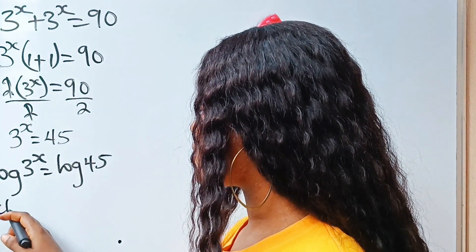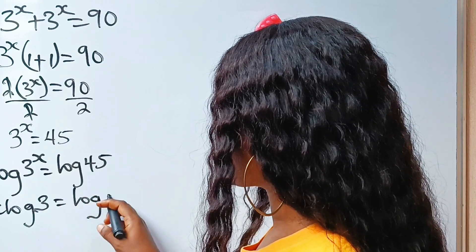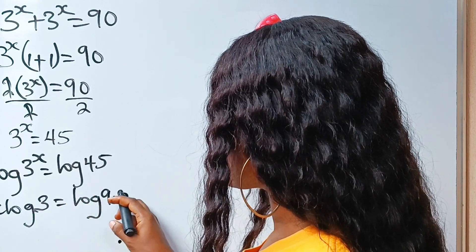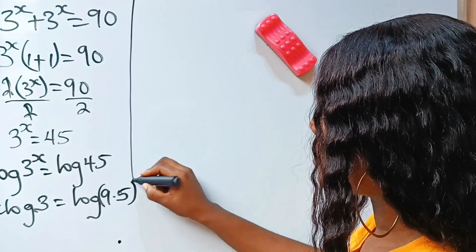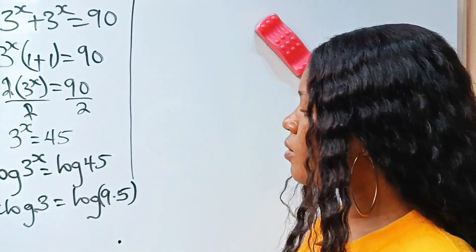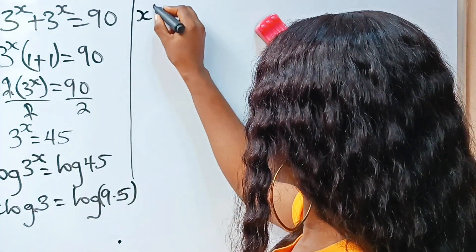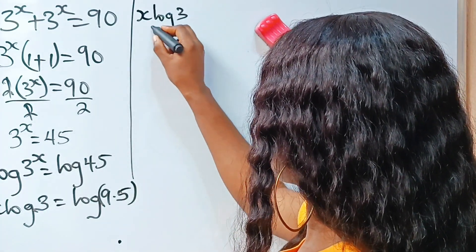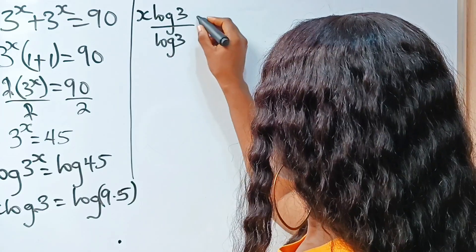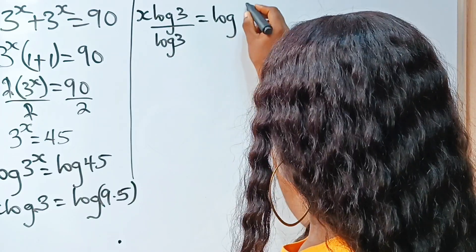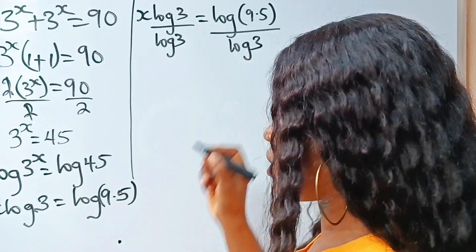So we'll have x log 3 is equal to log, and 45 is the same thing as 9 times 5 — log 9 times 5. Now let's divide both sides of this equation by log 3. So we have x log 3 divided by log 3 is equal to log 9 multiplied by 5 divided by log 3.